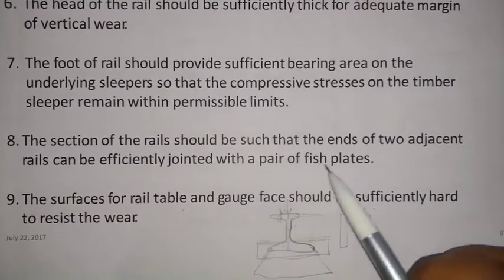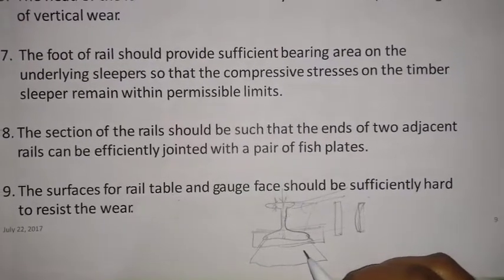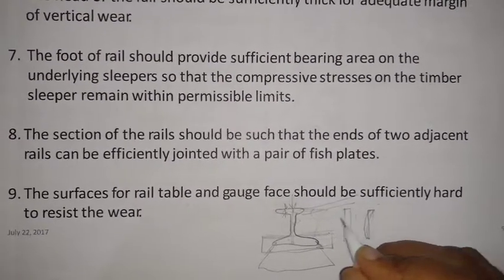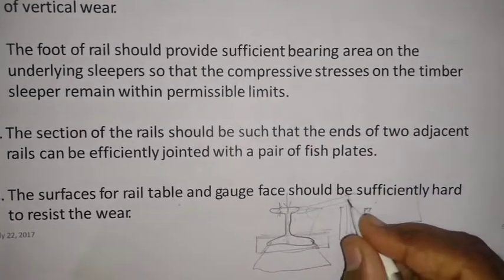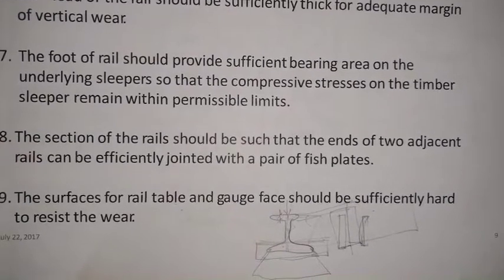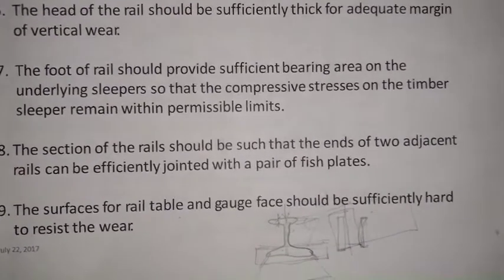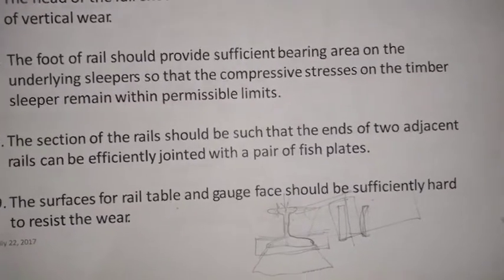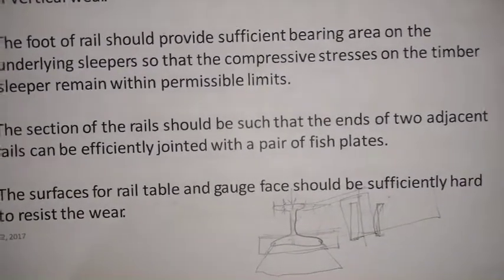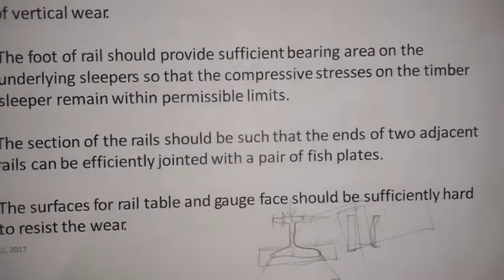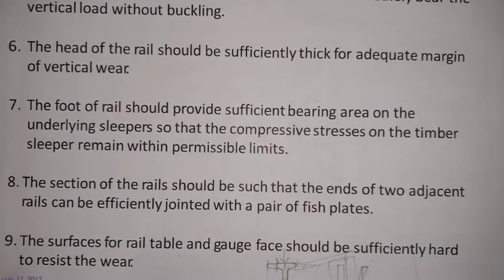The section of the rails should be such that the ends of two adjacent rails can be efficiently jointed with a pair of fish plates. The joint section should be such that fish plates can be fixed snugly. The surfaces for the rail table and gauge face should be sufficiently hard to resist wear, as these surfaces must resist wear and tear due to loads acting and other environmental factors.